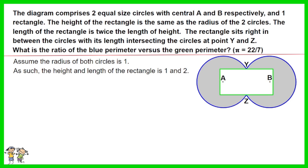As such, the height and length of the rectangle is 1 and 2. The green perimeter equals perimeter of the rectangle equals 1 plus 1 plus 2 plus 2 equals 6.